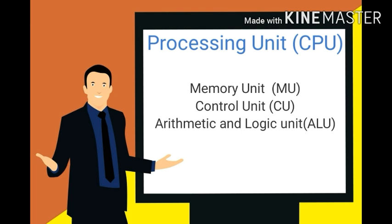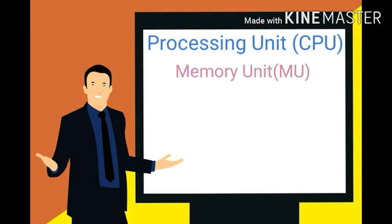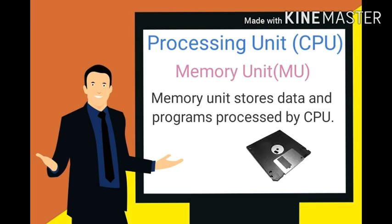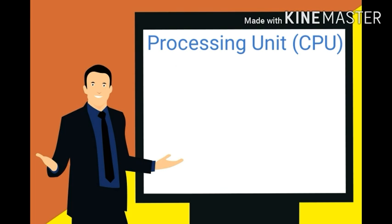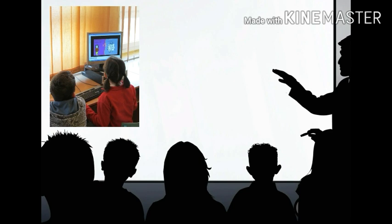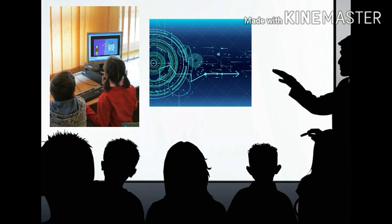Let's first see about the Memory Unit. Memory unit stores the data and programs that are processed by the CPU. यहाँ पर memory unit का काम है कि CPU के द्वारा जो भी processing होती है, उसका data और program memory unit में save होता है। For example, suppose आपने एक drawing बनाई है और आप उसे save करना चाहते हैं, तो आपका data save करने का काम memory unit करेगी।